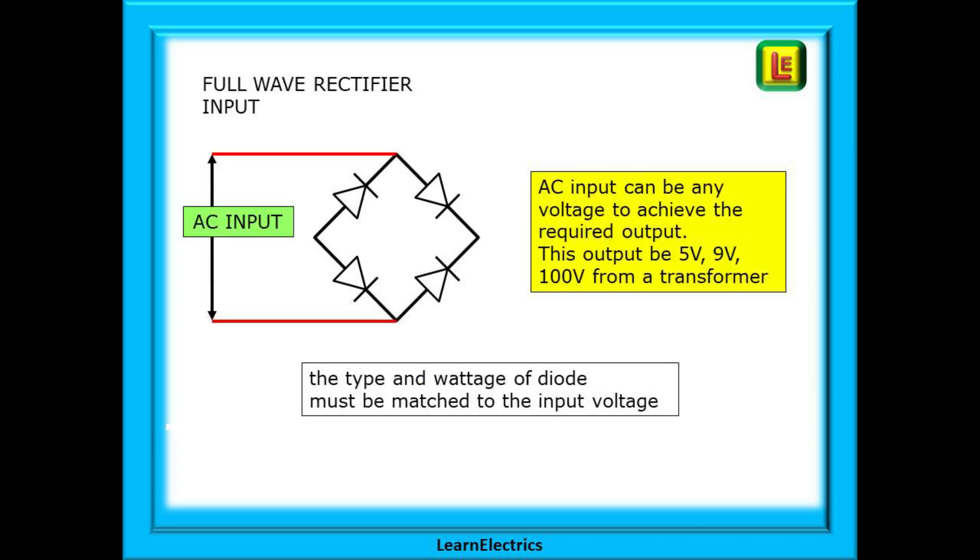The alternating current input is supplied as indicated and must go to the two points shown. This AC input can be any voltage to achieve the required output.